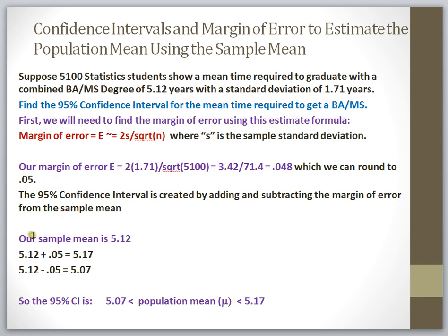That means that if I take my sample mean, which is 5.12, and I add on my margin of error of 0.05, I get the upper bound of my 95% confidence interval, which is 5.17. If I subtract my margin of error from my sample mean, I get my lower bound of my 95% confidence interval, which is 5.07. So my 95% confidence interval around the population mean, called mu, is estimated being in the range of 5.07 all the way to 5.17.